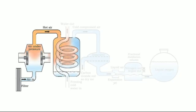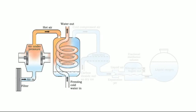Since there is a lot of pressure on the air, the temperature of the air increases, and it becomes hot air. This hot air is allowed to pass through the next chamber, where it comes in contact with cold water flowing through a twisted circular pipe. As this cold pipe revolves in the chamber, the hot air loses some of its heat.